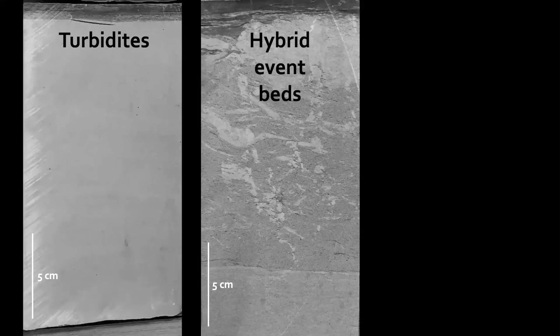My name is Zoltan Sylvester, and I will spend the rest of this presentation showing you some details from two cores taken from the Jomil field. To keep things simple, I'm only going to talk about three facies types listed here in order of increasing mud content: turbidites, hybrid event beds, and laminated facies.